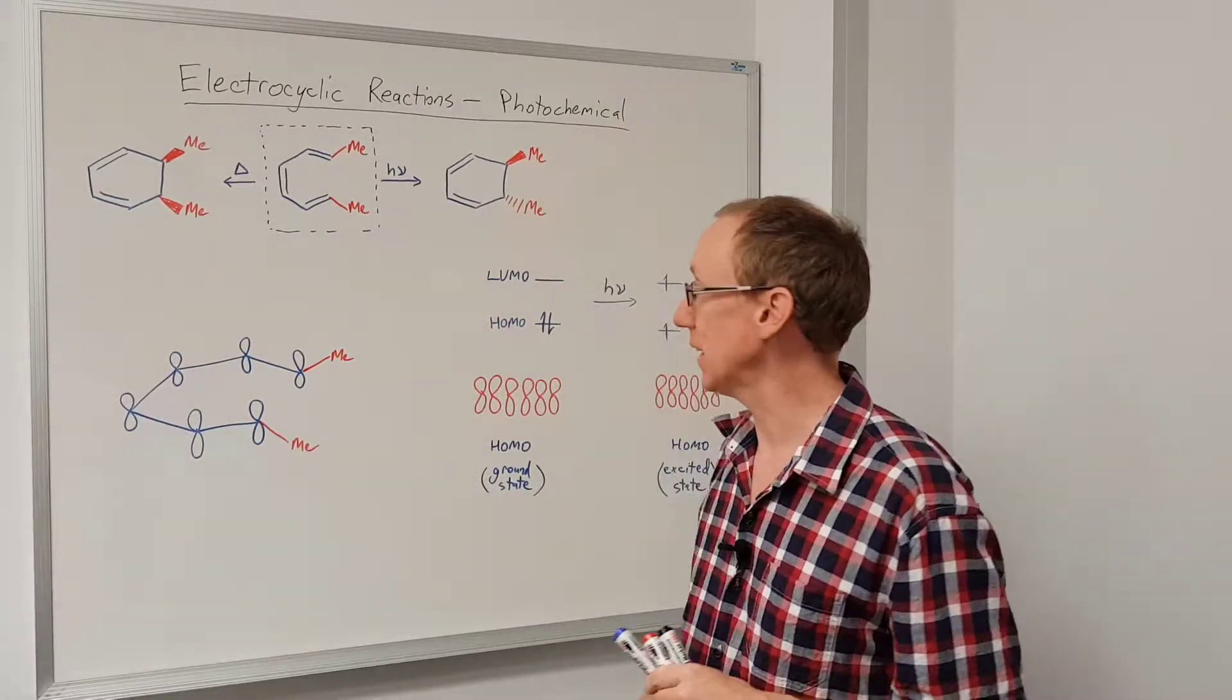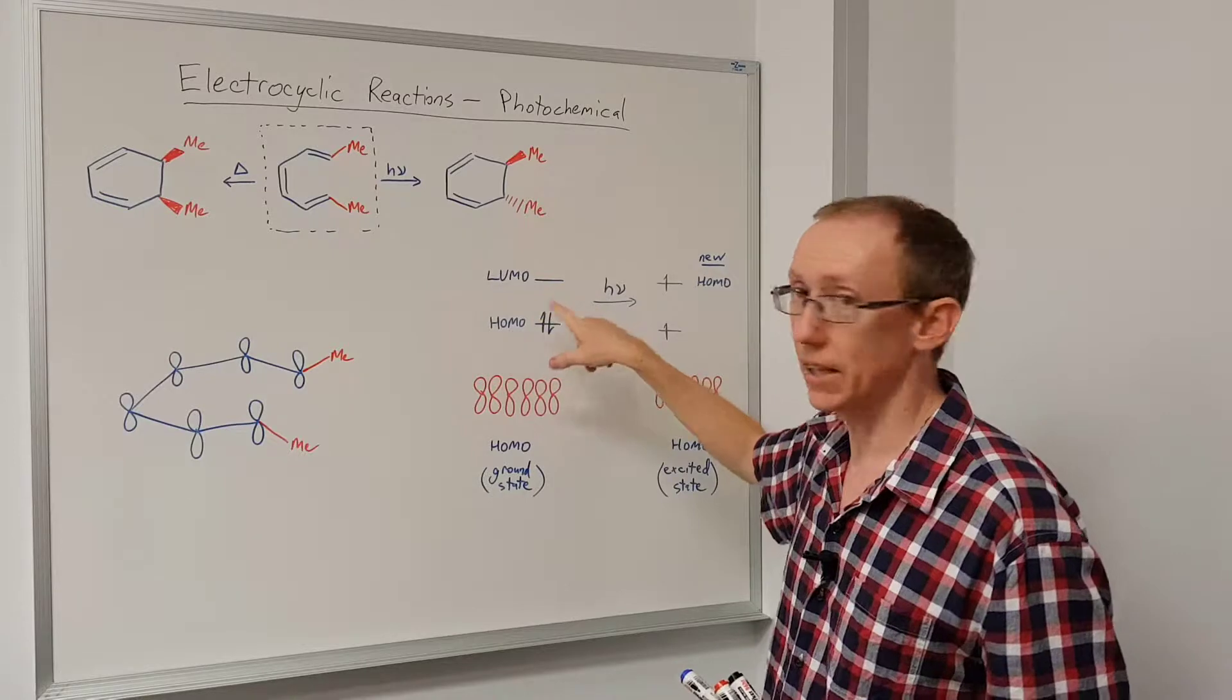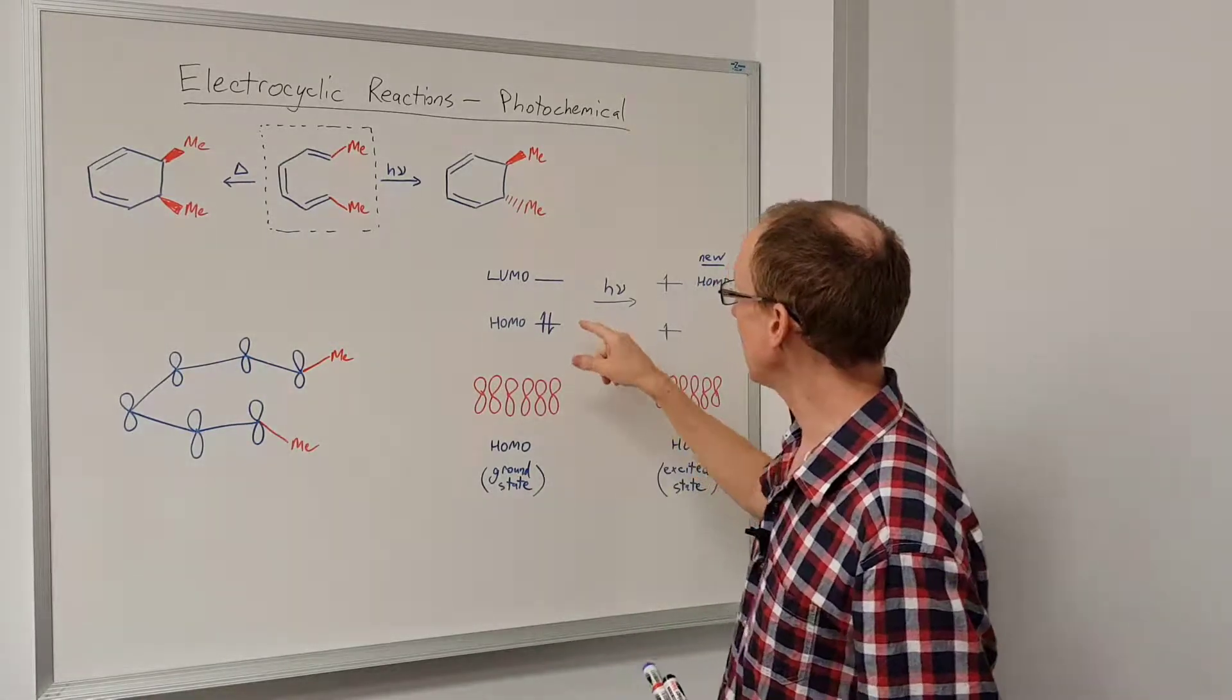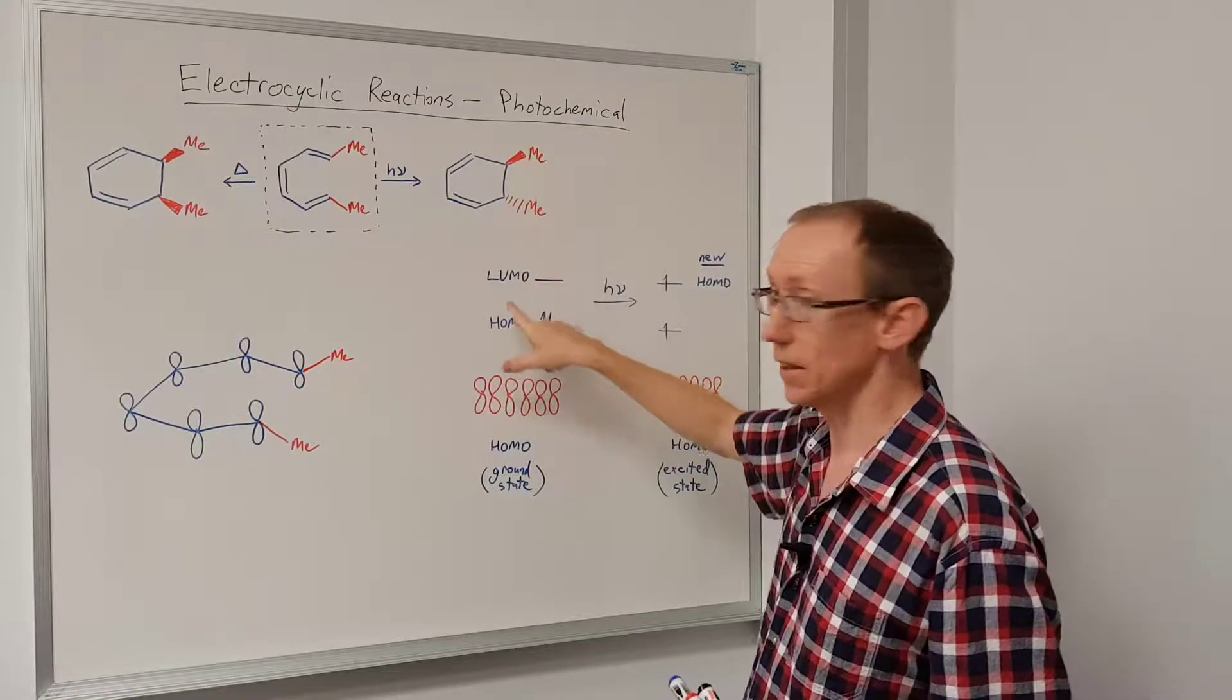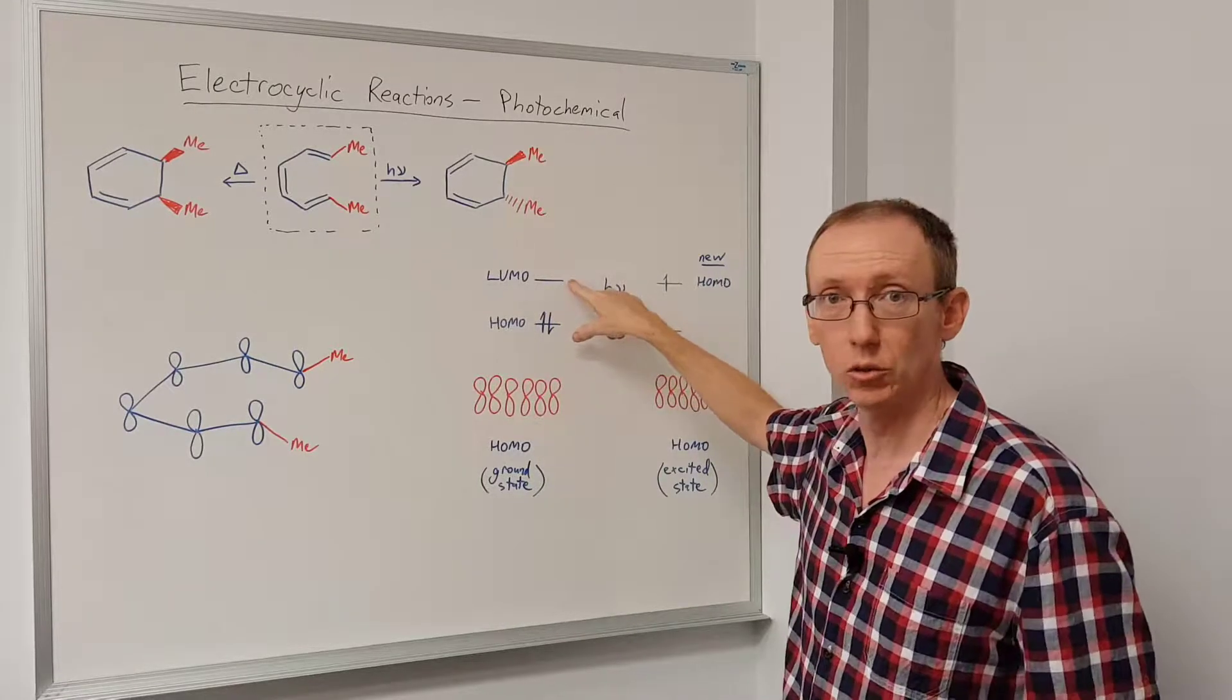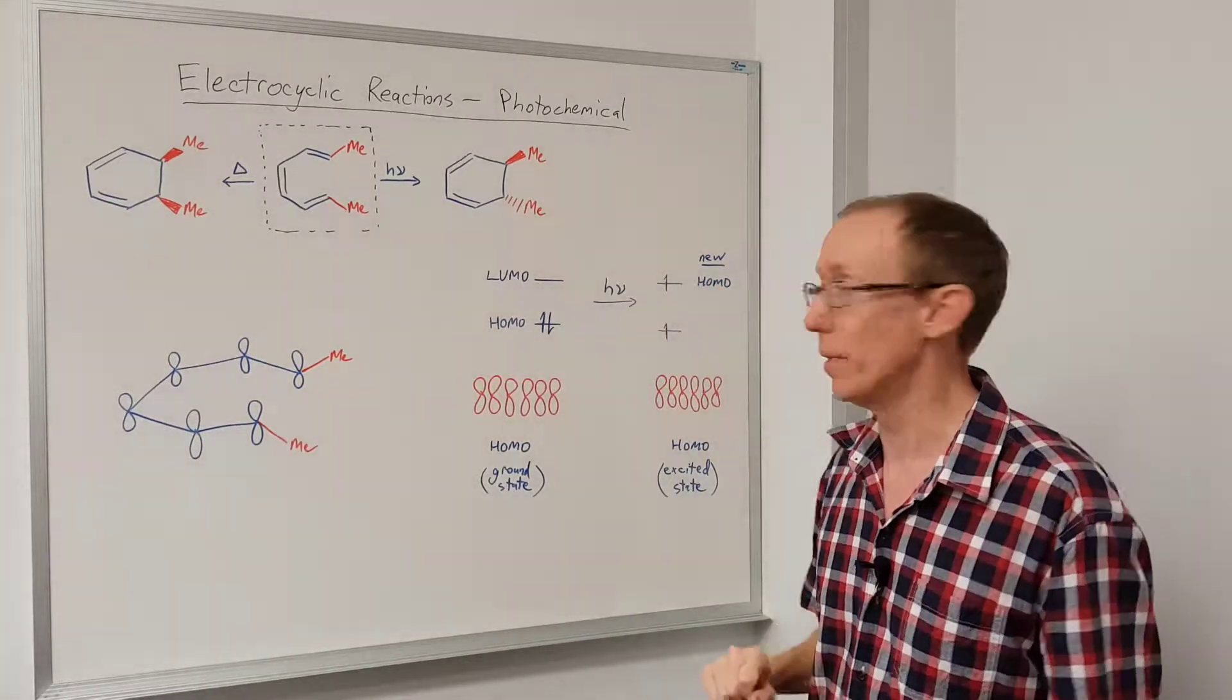So why is that the case? Well, it comes down to the fact that under photochemical conditions, we're going to change what is the HOMO. We're always interested in the HOMO for the electrocyclic reaction. And in the case of photochemical conditions, we take the ground state here, we shine UV light on it, and we're going to promote an electron from what was the HOMO up to what was the LUMO. Now in the excited state, the new HOMO is going to be what was the old LUMO.